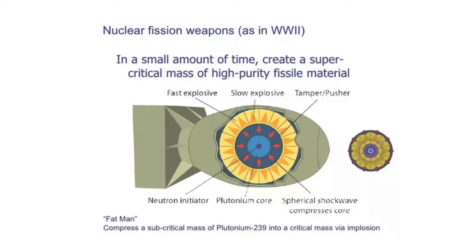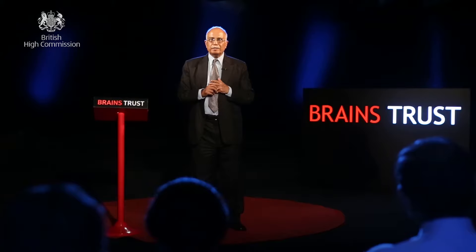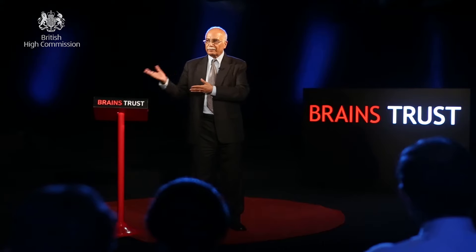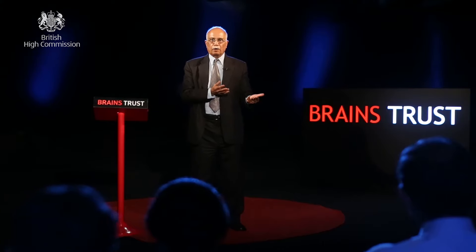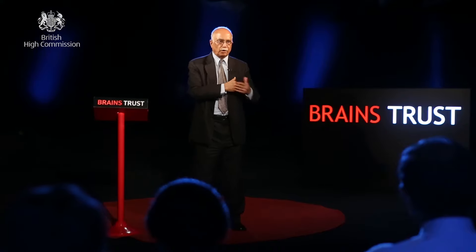Nuclear weapons are the same as a reactor, except the reaction goes very, very fast. What features of the uranium decide whether you're going to have a bomb or a reactor? How do you go from fuel for a reactor to fuel for a bomb? The difference is that in a reactor, you want a slow rate, almost close to one fission leading to the next. In the case of a bomb, you need to go much faster.